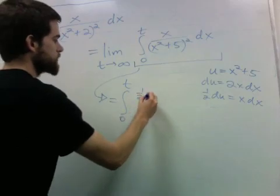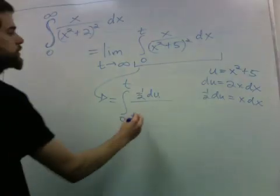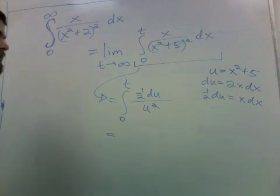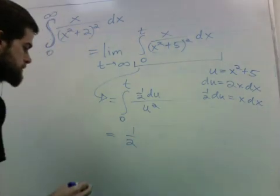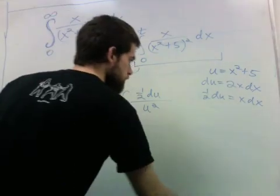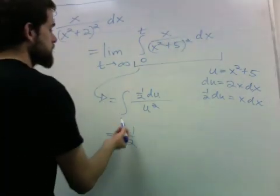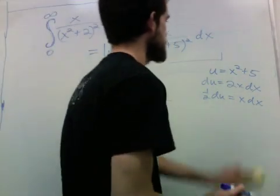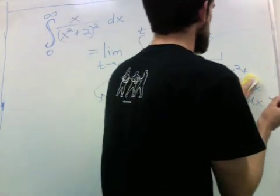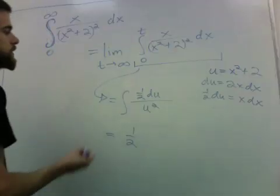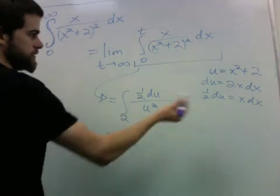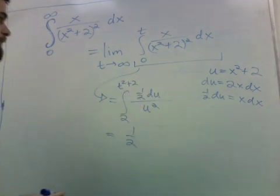And an antiderivative of 1 over u squared is negative 1 over u. So I should have changed my bounds, or leave them as x values. When x is 0, u is 5.